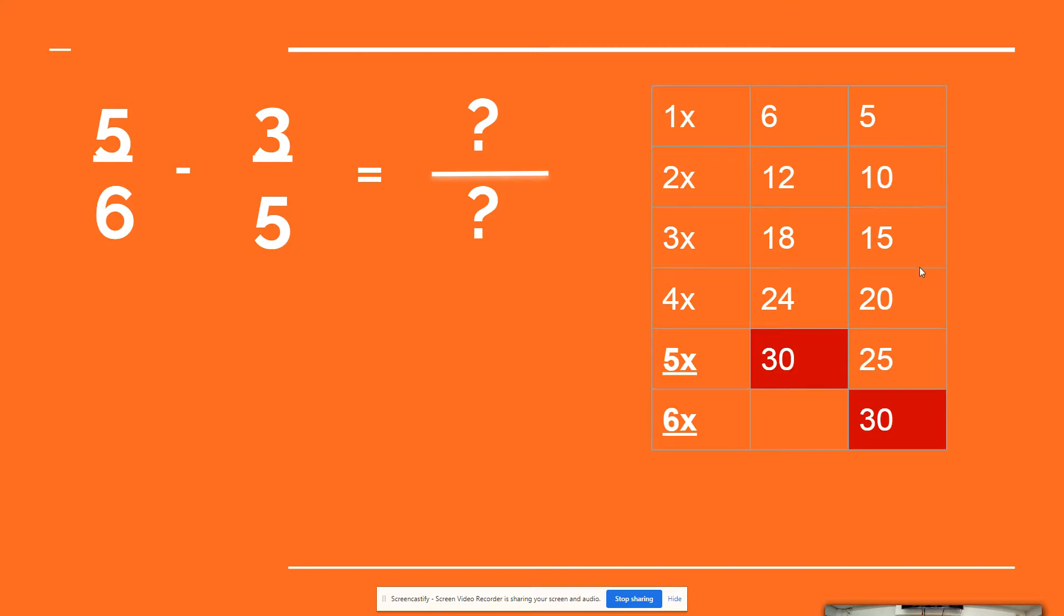5, 10, 15, 20, 25, and 30. So we have the same number now. How many 6 do we have to make it 30? It will be multiplied by 5. How many 5 are there for 30? There are 6, so we have to multiply it by 6.